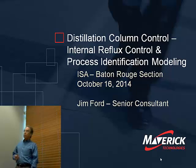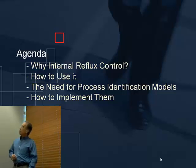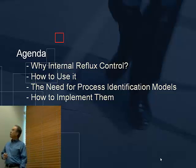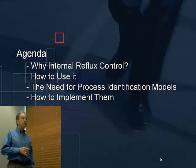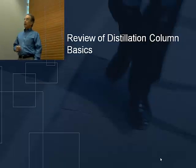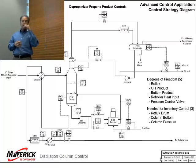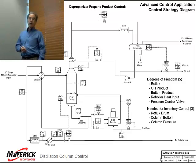I'm going to talk about two simple but useful concepts when implementing advanced control on distillation columns: internal reflux control and how to use it, and the need for process identification models when using analyzer feedback for composition control. We're talking about light ends distillation - one overhead product, one bottom product. Maybe in a future talk we could do some complex distillation like crude oil distillation. This is distillation 101.